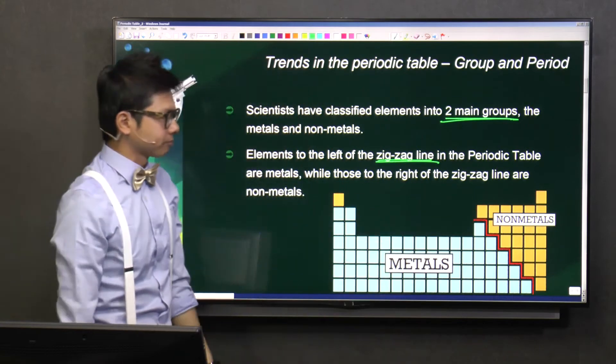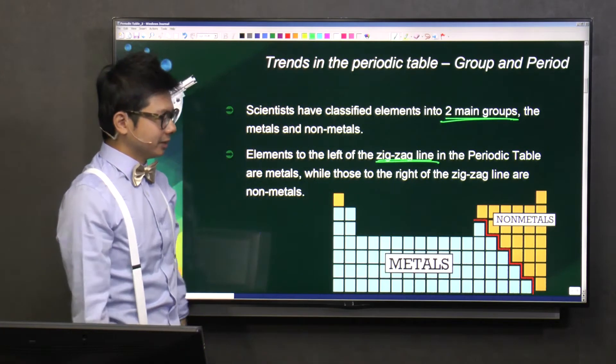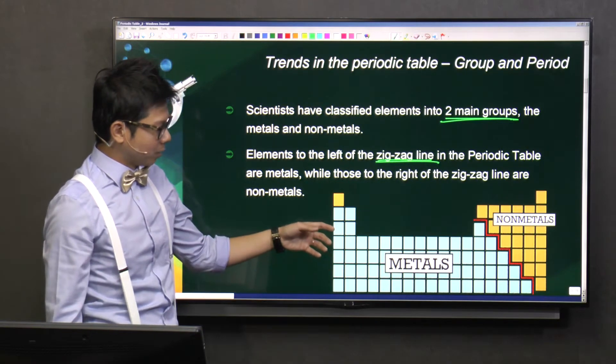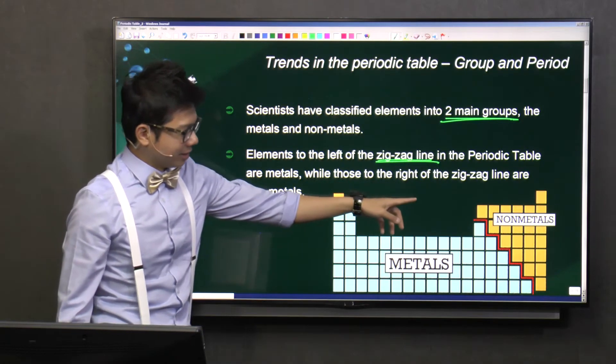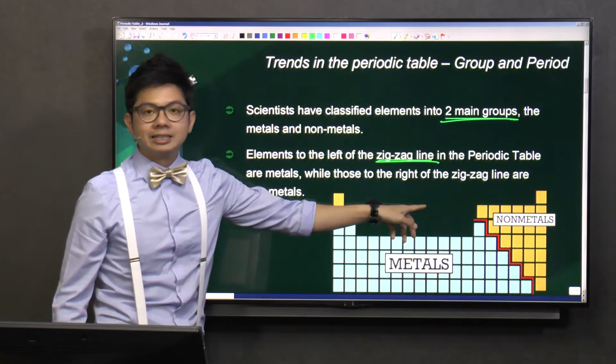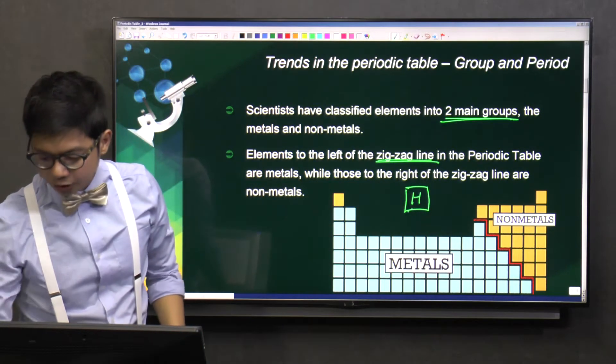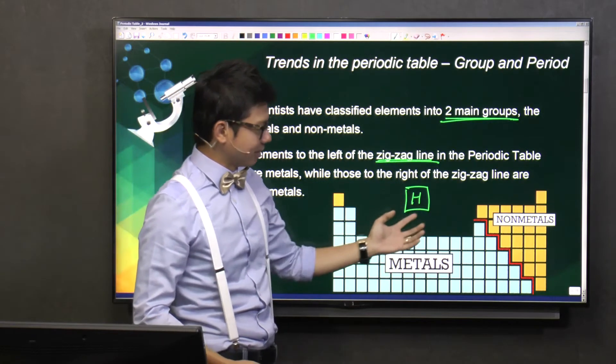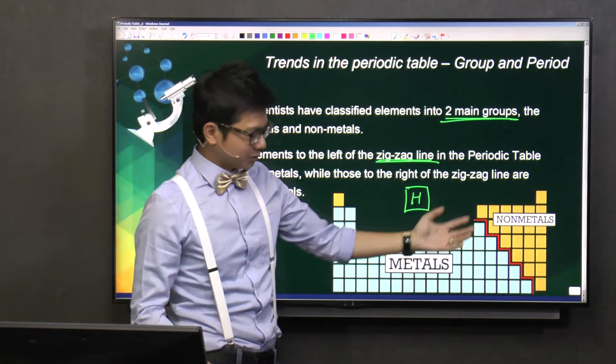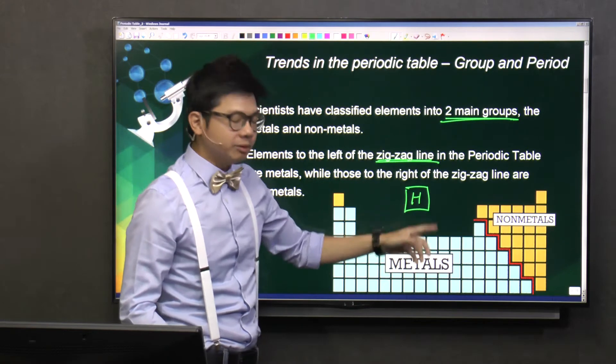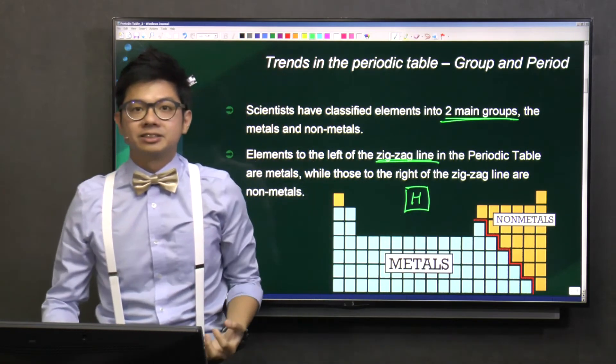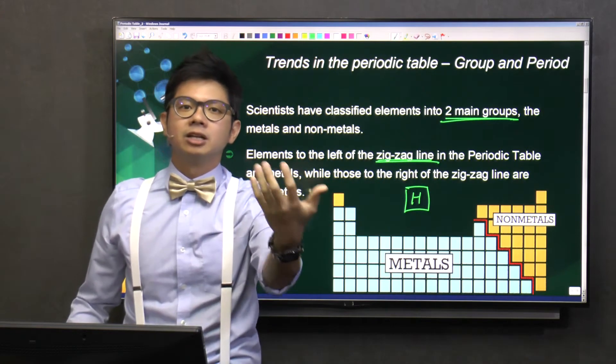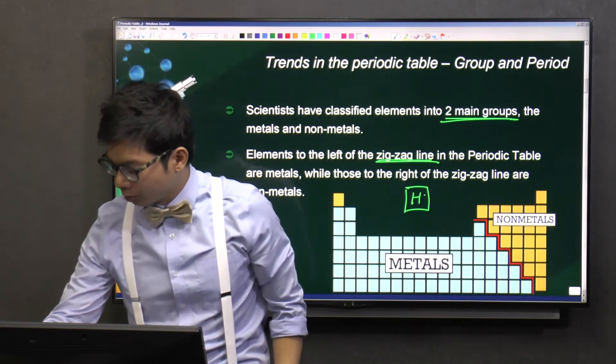Then there's one question. My student will ask me, sure, I draw this line already. But I find that there is one element which is floating in the center. It's hydrogen. So this line is right in the middle. So is it on the left side or on the right side? So guys, I can tell you, hydrogen, we can find it in our air, right? So hydrogen, if it's in our air, is it a metal or non-metal? Of course, it's a non-metal. So hydrogen will go here.